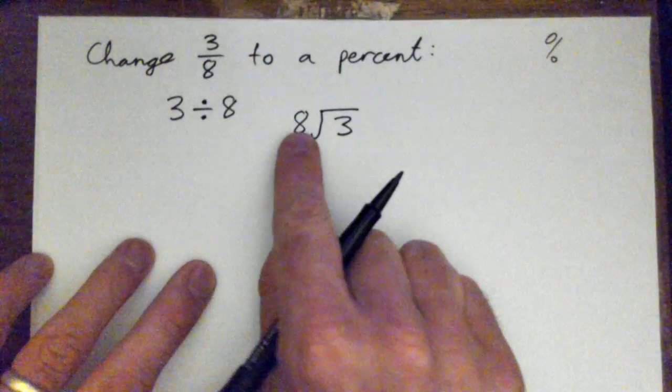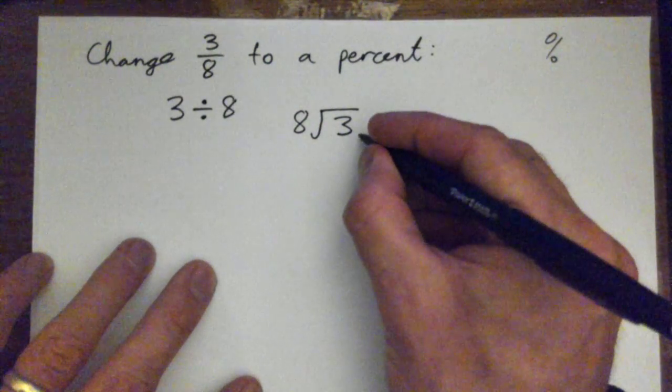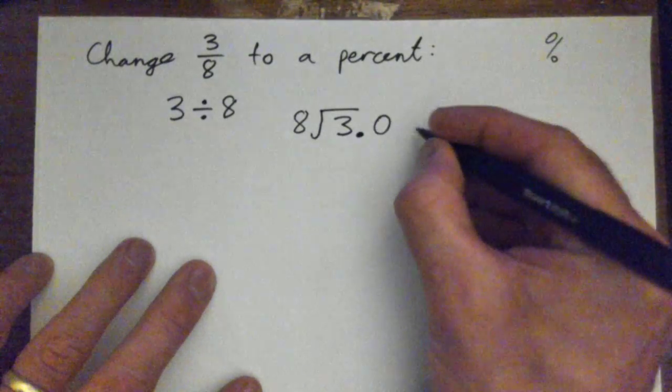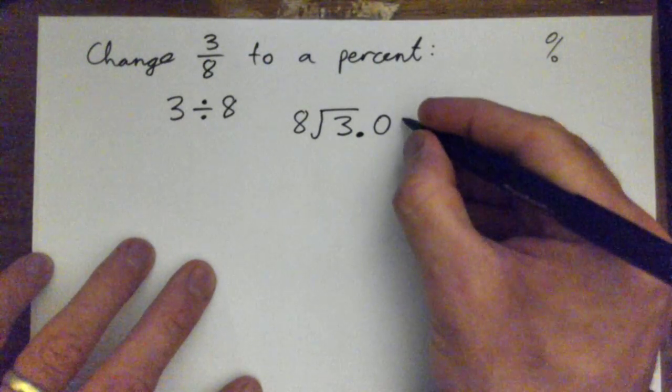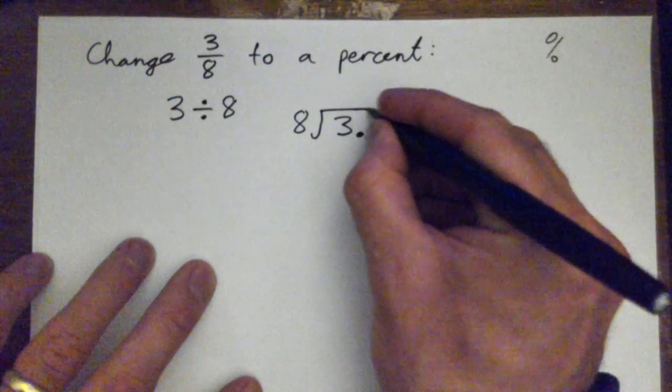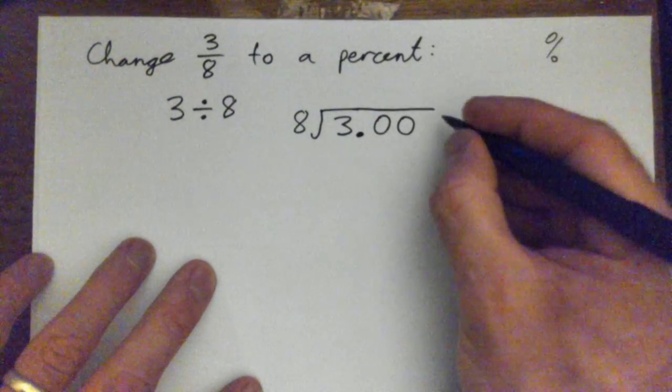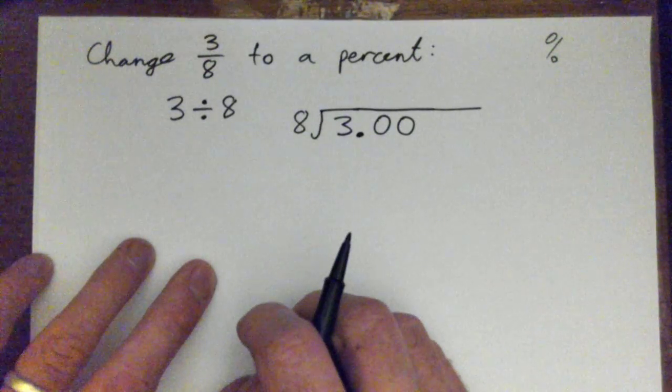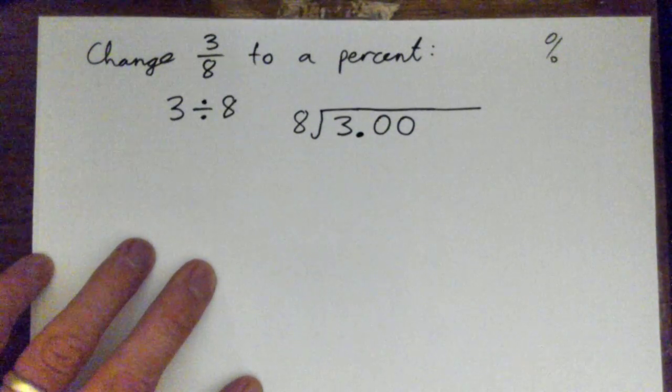But how do you do eight into three anyway? It looks like we need to turn the three into a decimal. Three-point-zero, or three-point-zero-zero. In fact, we'll probably need more zeros than that. And we can add more zeros on as we go. But let's start there anyway.